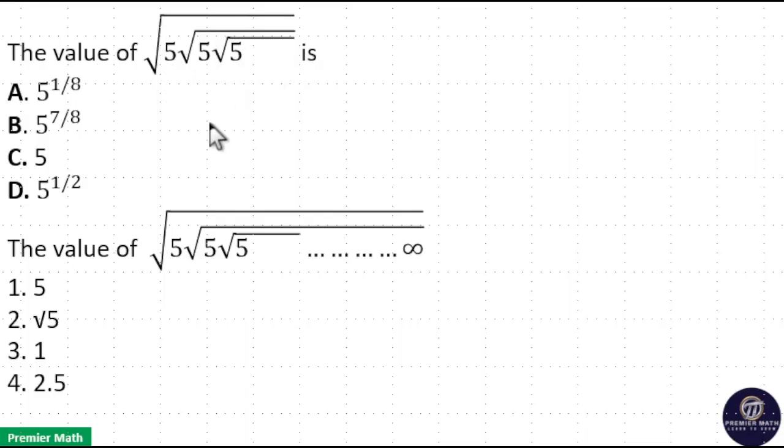The value of root 5 of root 5 of root 5. In the second case, this is up to infinity. In that case, you can directly write 5 as your answer. But here this is not up to infinity, so take the innermost term or you can use the formula n^(2^t - 1) / 2^t.